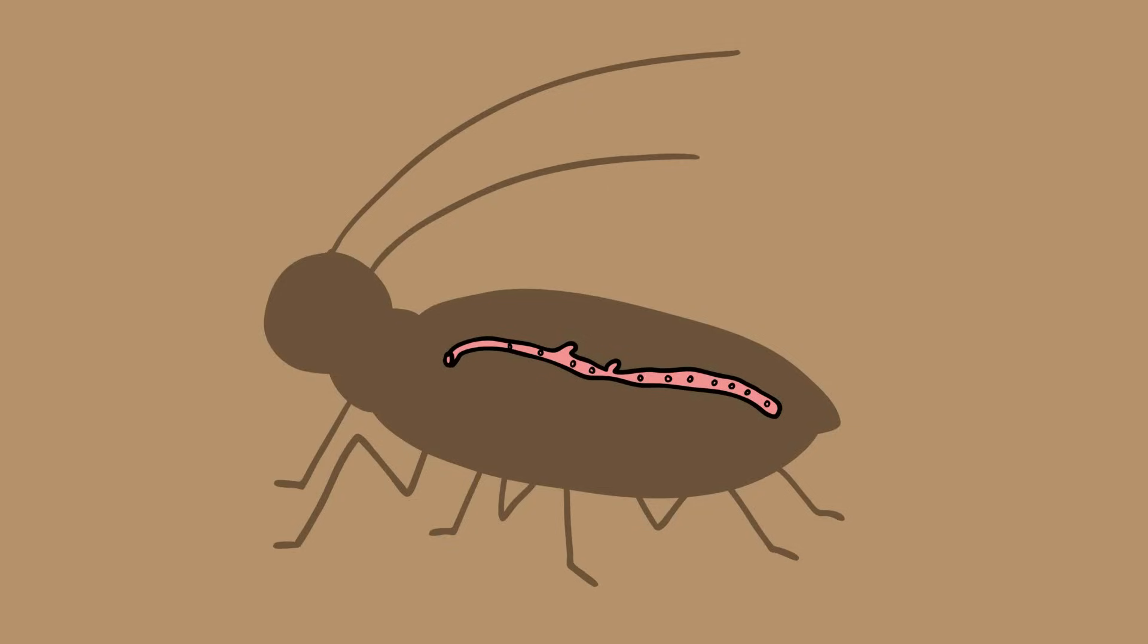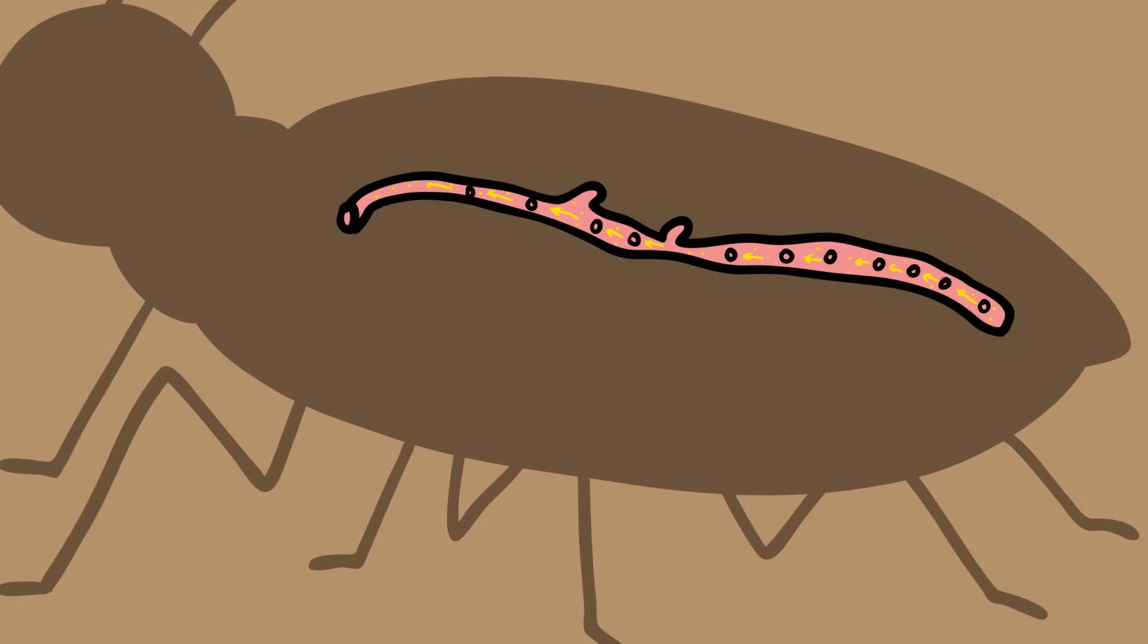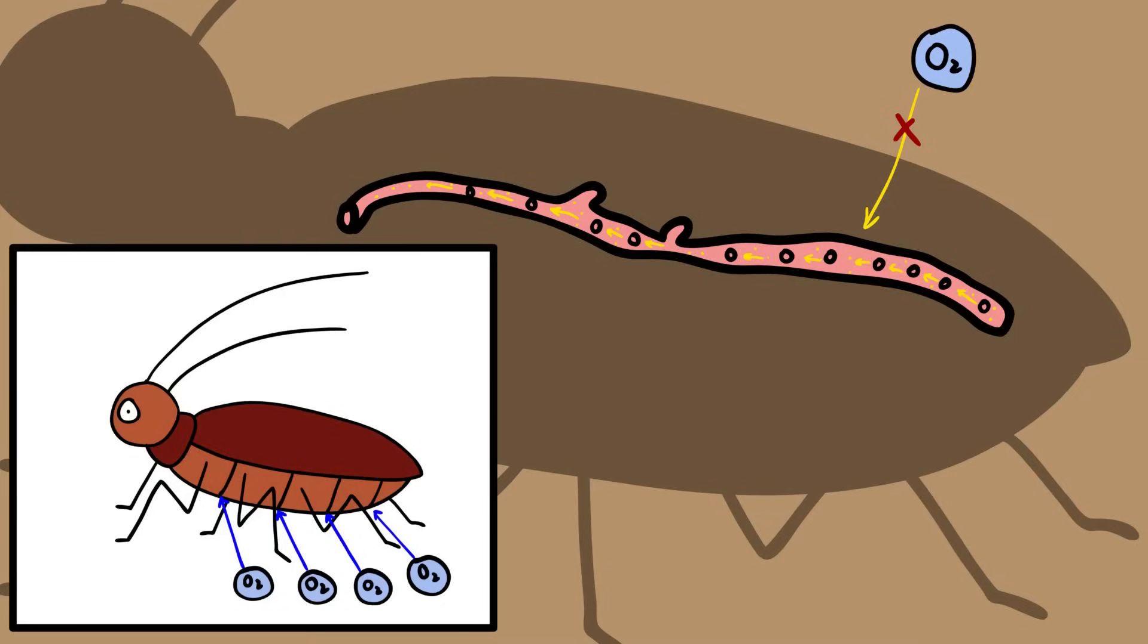Cockroaches. The hearts of these much-maligned insects have 12 or 13 chambers, but rather than blood, the cockroach heart moves a whitish, yellowish substance called hemolymph through their bodies. The nutrient-rich hemolymph nourishes the organs but does not carry oxygen, as insects are oxygenated through openings in their body surface.